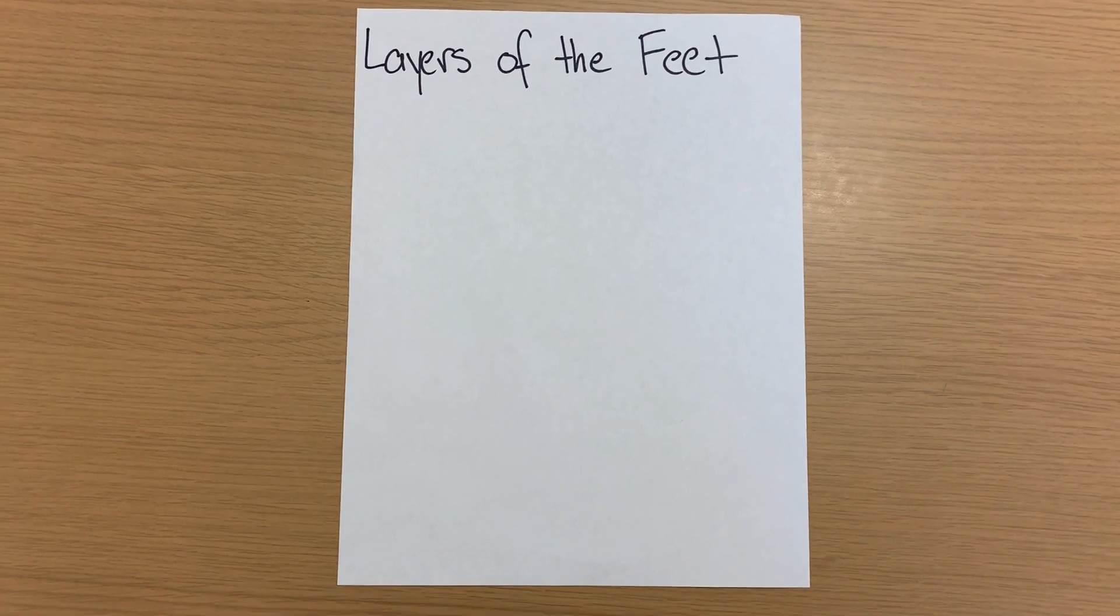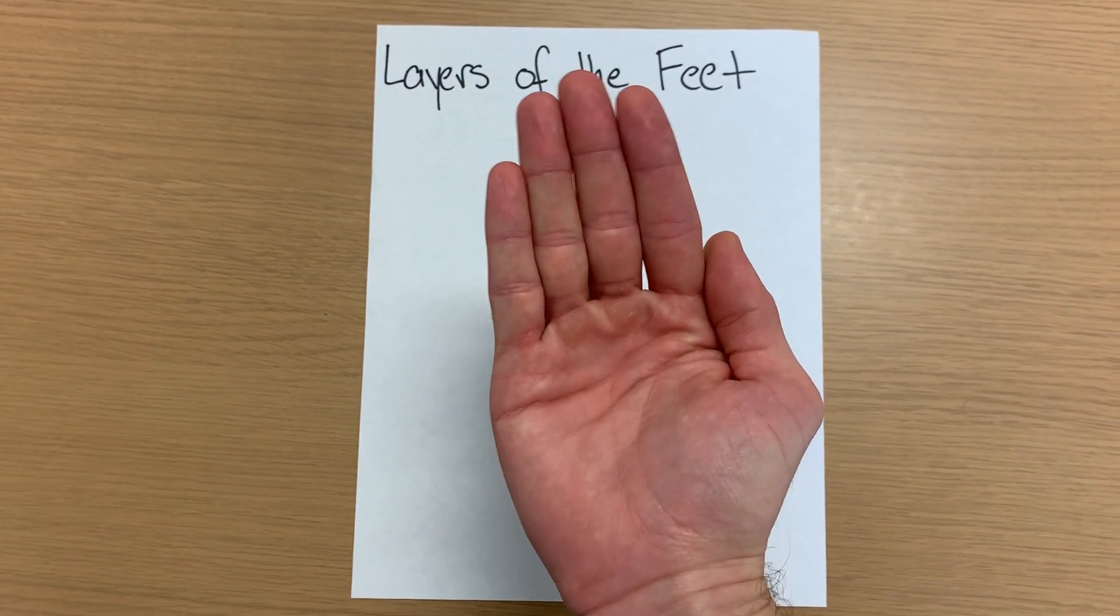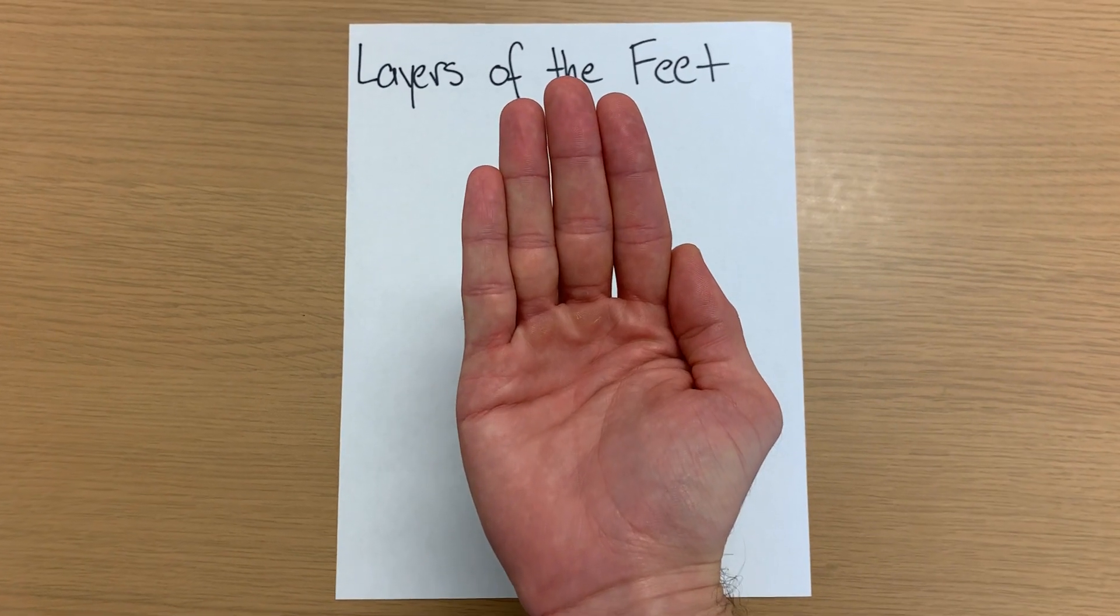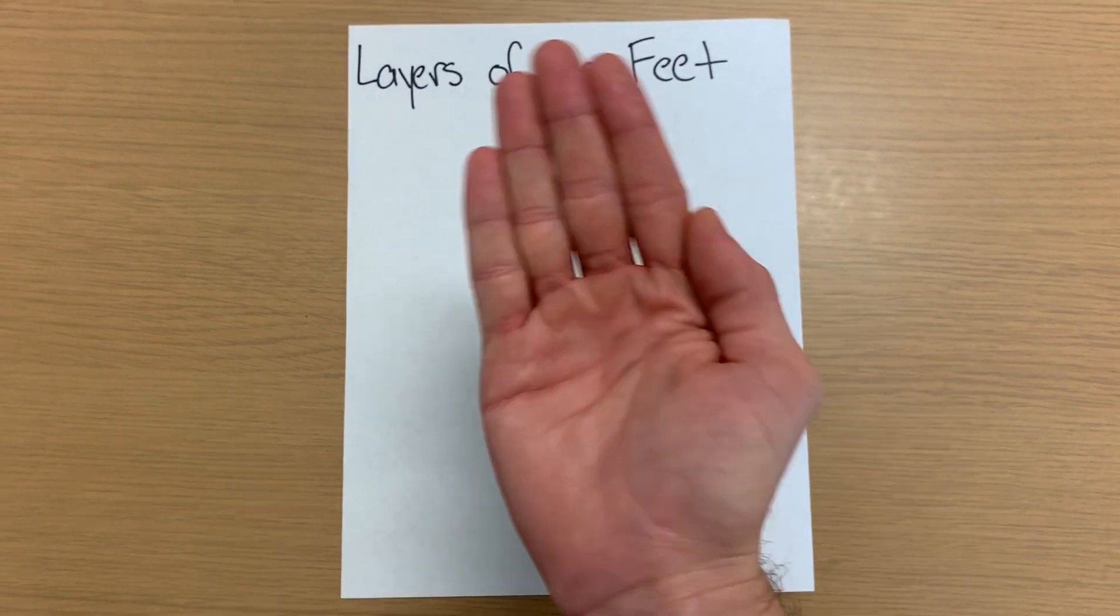So for our first layer, our most superficial layer, we just have an open hand like this. And this is our plantar aponeurosis. Pretty easy.